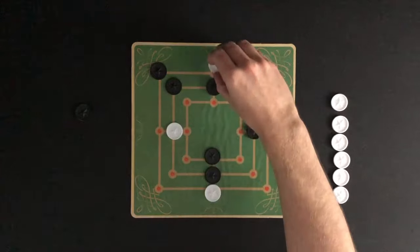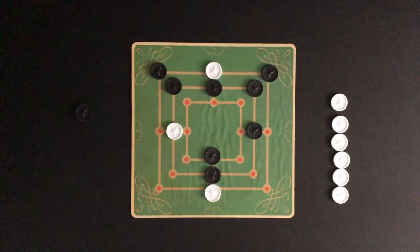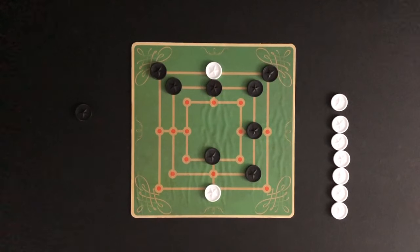Here, white only has three markers left and jump moves a marker. Black is able to make a move to get three in a row again and removes one of white's markers. When a player is down to two markers, the game is over. Black wins this game.